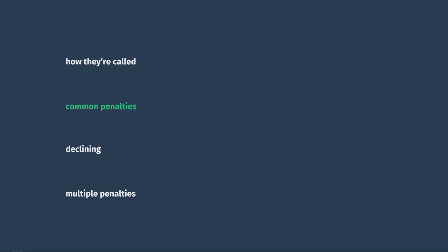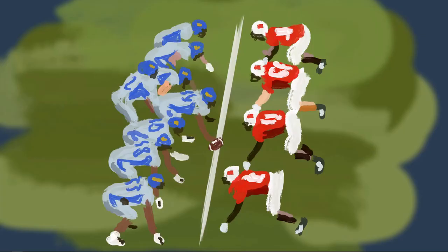Let's take a look at some of the most common penalties you'll see in a game. False start is something that occurs before the play even starts. As all the players come up to the line of scrimmage — which is where the ball is — defensive players have no set position and can move around wherever they want. But once the offense is set, they cannot move until the ball is snapped, unless they're shifting or going in motion.